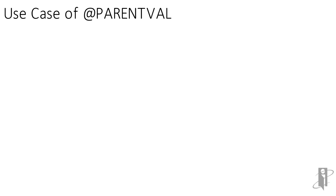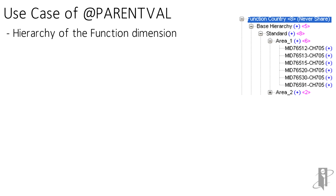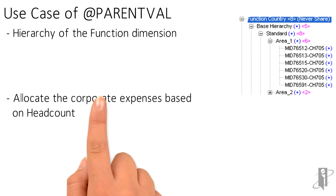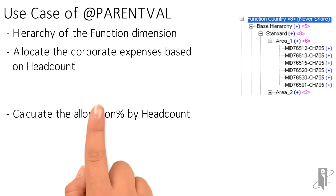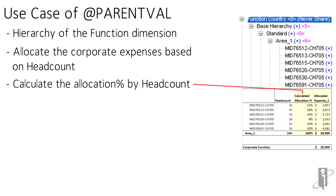In this use case, you will see a basic hierarchy for the function dimension. Area 1 is the parent member. You want to allocate a corporate expense to these functions based on headcount. Using the atParentFile function, you will determine what the total headcount is for the parent of these members. You calculate the allocation percent using the headcount of the level 0 member divided by the total headcount of its parent.